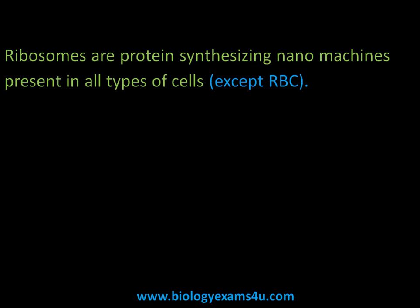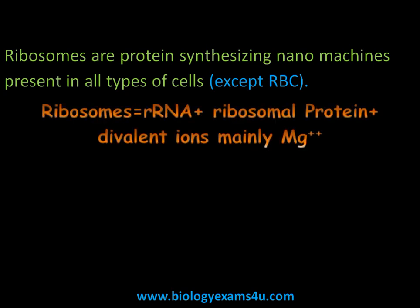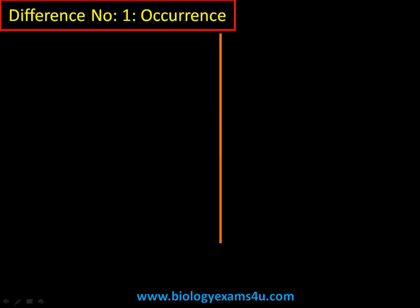Ribosomes consist of rRNA, ribosomal proteins, and divalent ions like magnesium, which are needed for the dissociation and association of ribosomal subunits. This is also called a ribonucleoprotein complex. The primary function is protein synthesis. We will be discussing in detail the differences between 70S and 80S ribosomes.